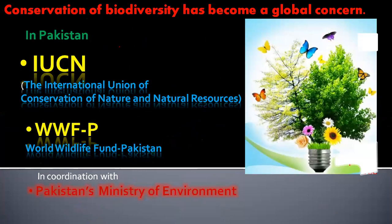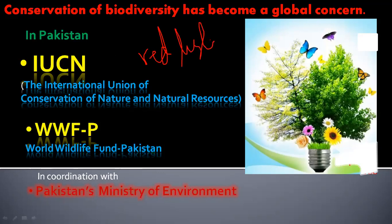Conservation of biodiversity has become a global concern. Biologists urge national policymakers to state a set of rules necessary to protect species. They demand that laws should define the species which are threatened by extinction and must be protected. This means they have to make a red list — the list of organisms which are endangered or threatened — from which biologists and researchers can get help on how to protect that species.